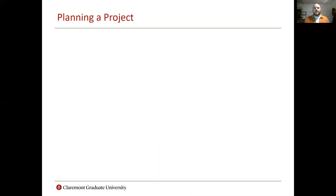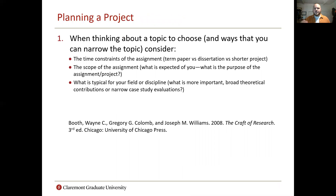Let's look at what goes into planning your question and your project. First, here are some things to consider: Are there time constraints to your project? A dissertation-level research question is very different than a term-paper-level research question. What's the scope of the assignment? What's expected of you? It's worth asking your professors if they haven't clarified. And lastly, what's typical for your field or discipline? Does your discipline focus on making broad theoretical contributions, or is it more about narrow case study evaluation, smaller experiments, things like that?